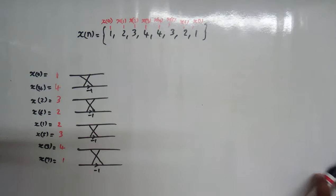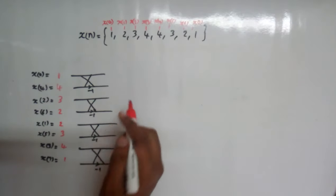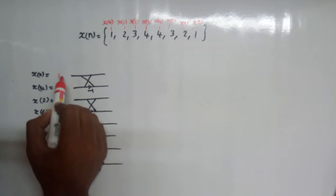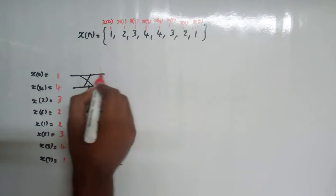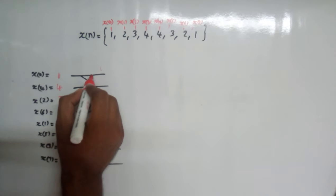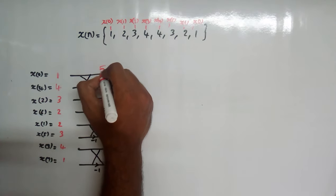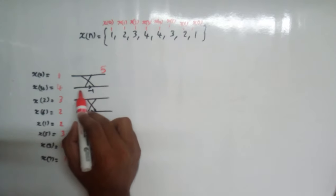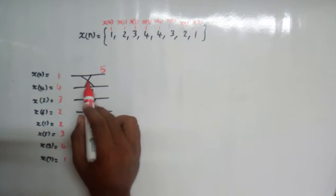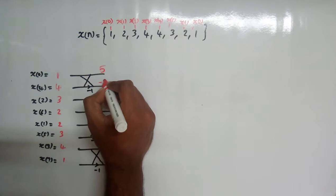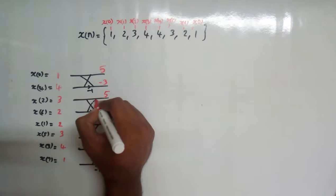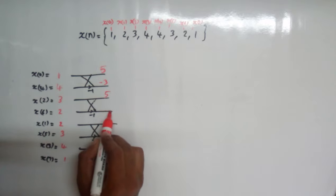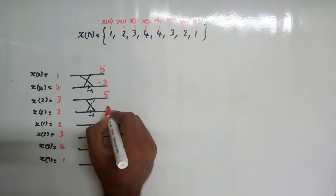Now we need to add the terms. The value in the first line is 1. So 1 stays as 1, and 1+4=5. For the second line: 4 × (−1) = −4, and −4+1 = −3. Then 3 and 3+2=5. Then 2×(−1)=−2, and −2+3=1.